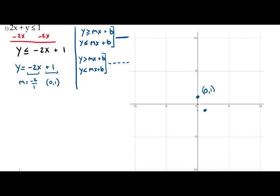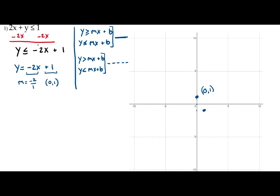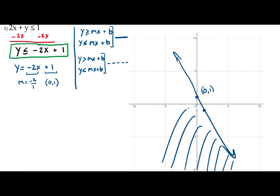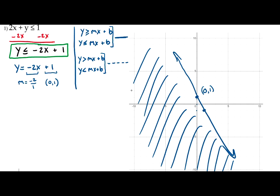Since we have y is less than or equal to negative 2x plus 1, we start by graphing the line — and in this case it's a solid line because of the 'or equal to'. Because the inequality symbol is less than or equal to, we shade everything below that line. So every point on the line or below the line is a solution to this inequality.